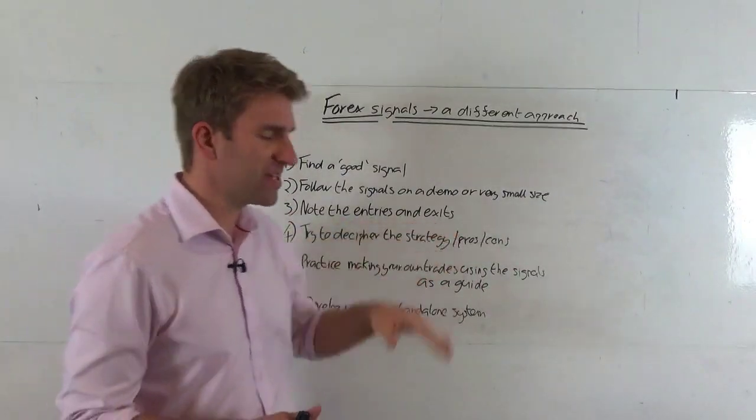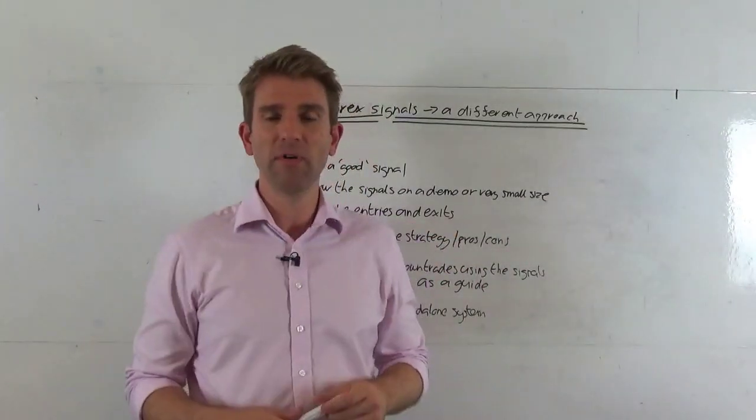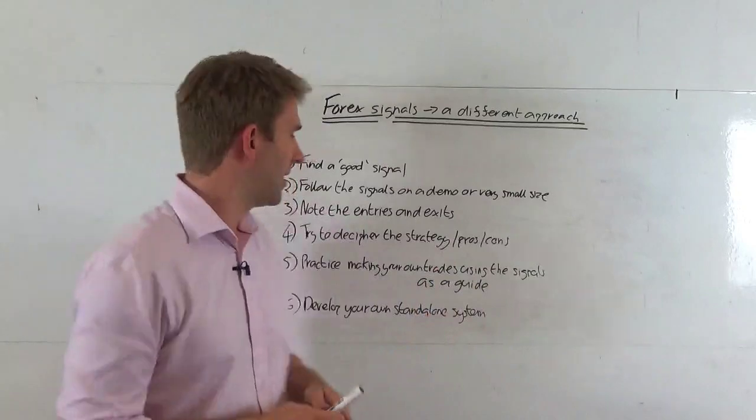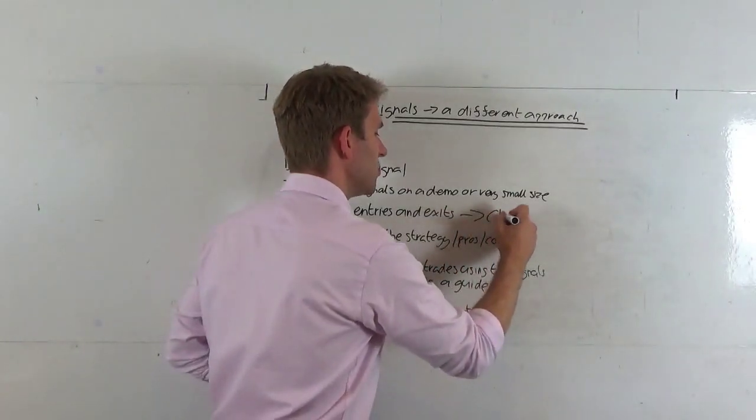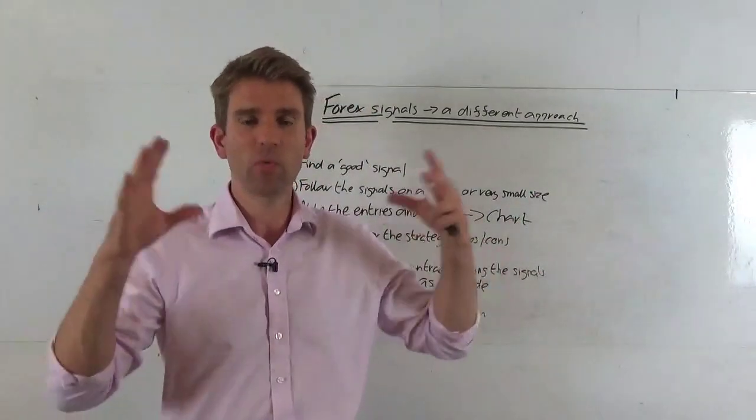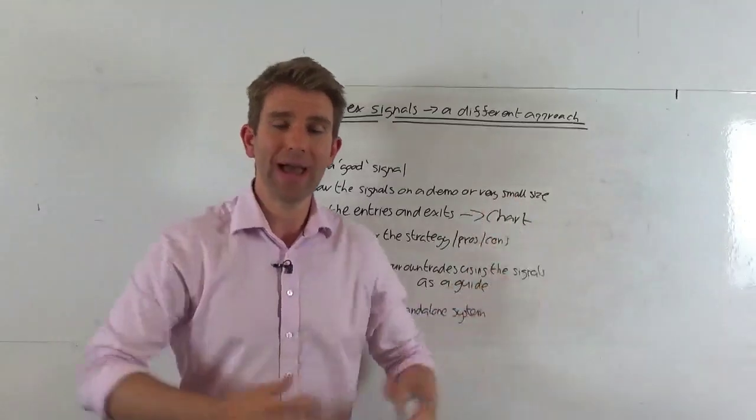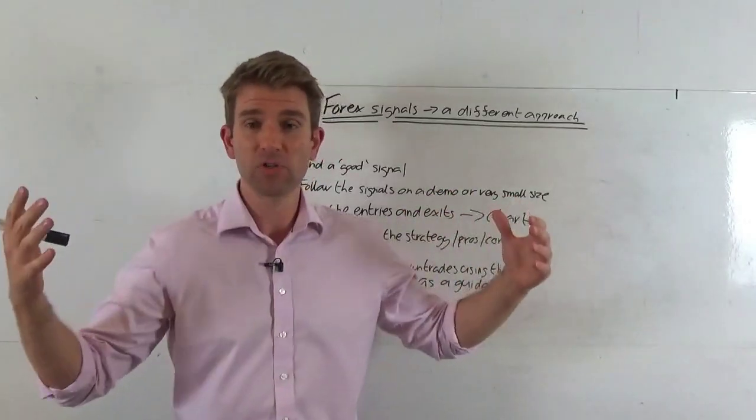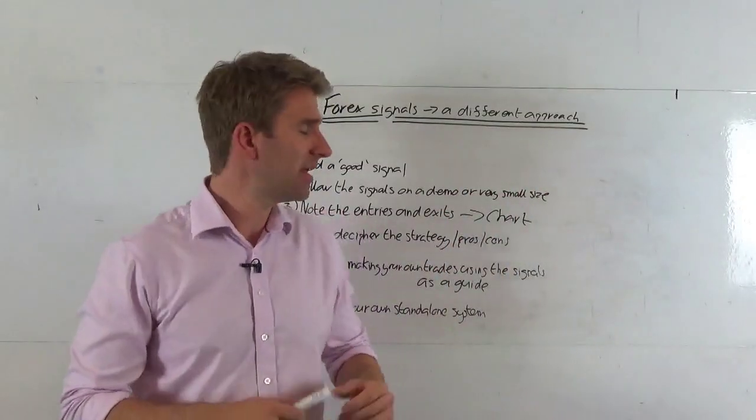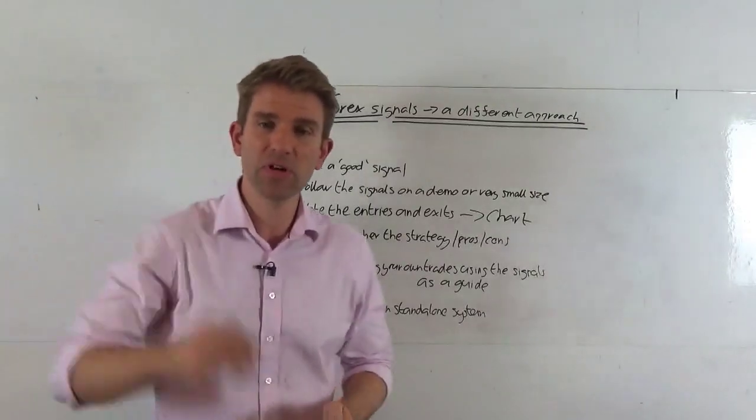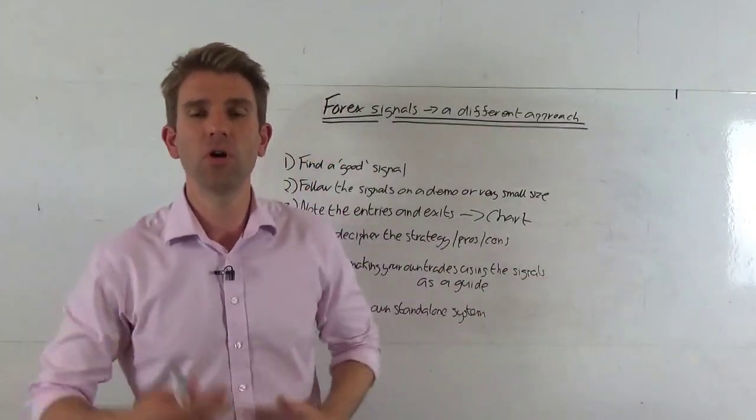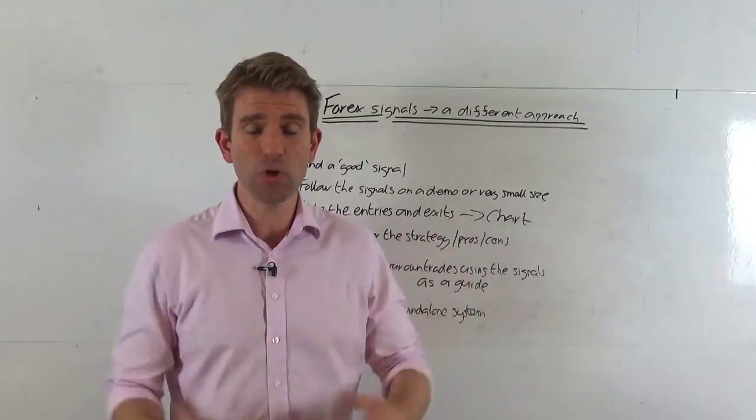Okay, move on. Number three then: note down the entries and exits. So as the signals are coming through from your provider, they're like, okay we're going long cable here, we're going short euro US dollar at this level. Start to note it down. And one thing I didn't put on here is print off your chart or annotate it onto your chart. So print off your charts, put your charts on the screen, screenshot it, whatever it may be, and start to annotate where the signals are coming. So you've got, if it's swing trading, you're printing off your daily chart or your four-hourly chart of GBP USD. You're putting the buy signal in, you're waiting, get the exit, you put the sell signal, and then you start to build a bigger picture.